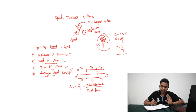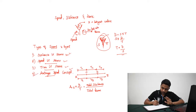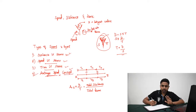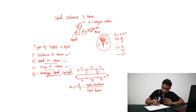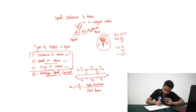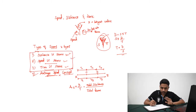First I will explain the average speed concept, which is very easy, but they don't ask this concept very often. So I will explain this first and finish it off, then we will move to the three types of problems which are mainly asked in all competitive exams.